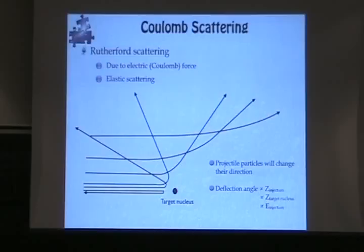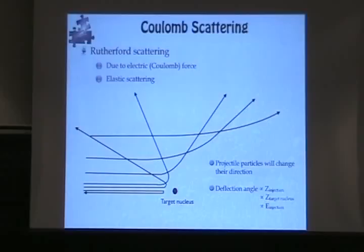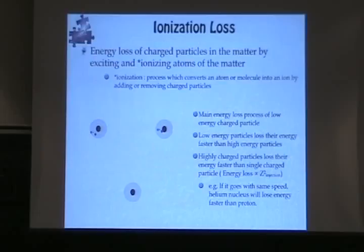The deflection angle — how much the particle is deflected — depends on the atomic number of the incident particle (whether it's a proton or helium), the atomic number of the target (heavier target means more bending on average), and the energy of the injected particle. If the energy is really high, it tends to bend less — just as a charged particle bends less in a magnetic field if it has higher energy.